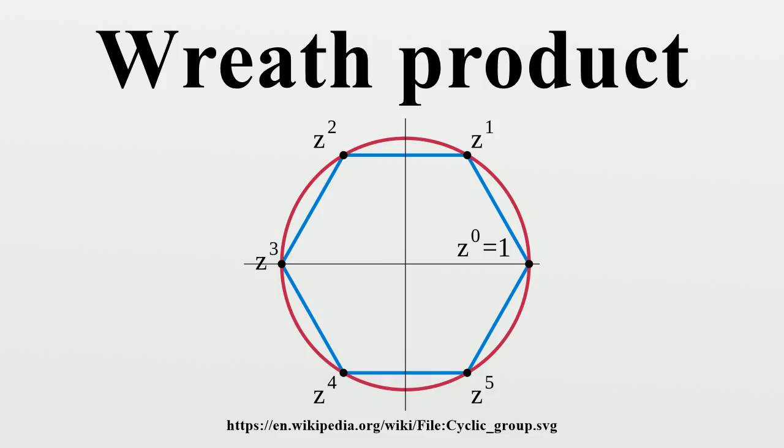For H in the wreath product and lambda times omega, the Primitive Wreath Product Action on lambda to the omega is defined. An element in lambda omega is a sequence indexed by the H set omega. Given an element H in the wreath product, its operation on lambda omega is given by the specified formula.